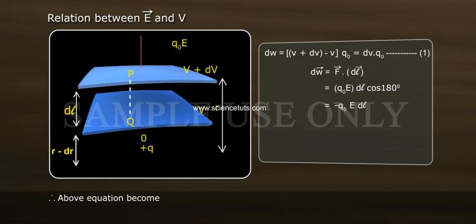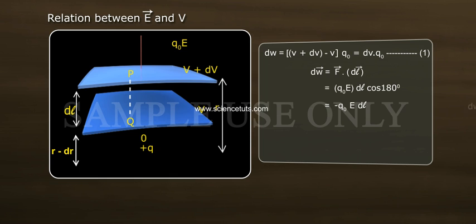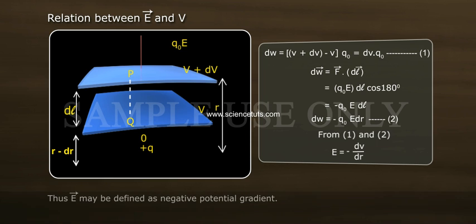Therefore, above equation becomes dW equal to minus Q naught E dR, equation 2. From equations 1 and 2, E is equal to minus dV by dR.